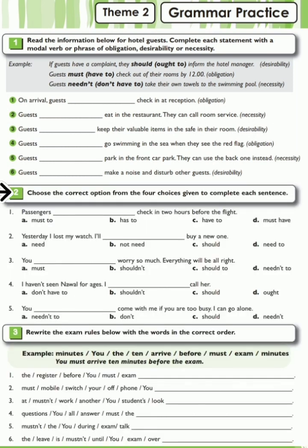Choose the correct option from the four choices given to complete each sentence. 1. Passengers ___ check in two hours before the flight. A. Must to  B. Has to  C. Have to  D. Must have. 2. Yesterday I lost my watch. I'll buy a new one. A. Need  B. Not need  C. Should  D. Need to. 3. You ___ worry so much. Everything will be alright. A. Must  B. Shouldn't  C. Should to  D. Needn't to. 4. I haven't seen Nawal for ages. I ___ call her. A. Don't have to  B. Shouldn't  C. Should  D. Ought. 5. You ___ come with me if you are too busy; I can go alone. A. Needn't to  B. Don't  C. Should  D. Needn't.